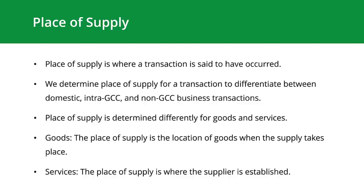For the supply of goods, the place of supply is the location of the goods when the supply takes place. Exceptional cases are when there's a cross-border supply, supply of water and energy, or real estate. In the case of services, the place of supply is where the supplier is established. Exceptions include cross-border supply between businesses and electronic services. I hope you've gotten the idea of what place of supply is. Now let's view the place of supply for goods and services in detail.